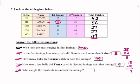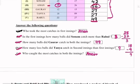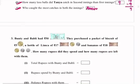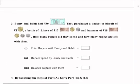Who caught the most catches in both innings? We can see from the table that Aman caught the most catches in both innings, so we will write Aman. Question number 3: Bunty and Bubbly had rupees 50. They purchased a packet of biscuits for rupees 5, a bottle of Limca for rupees 17, and bananas for rupees 18.